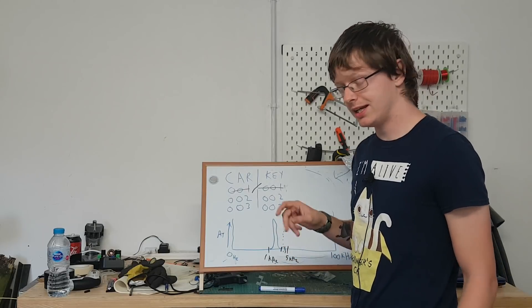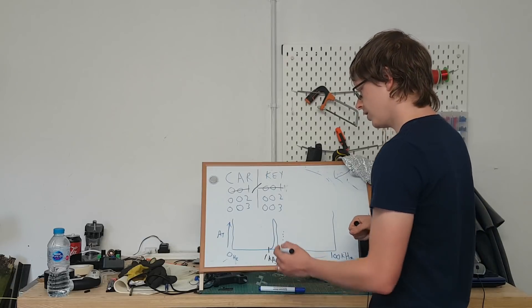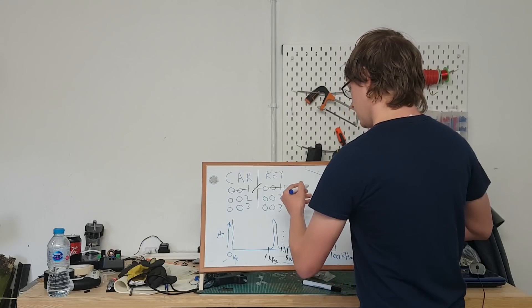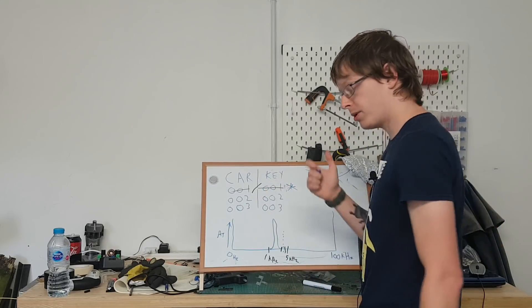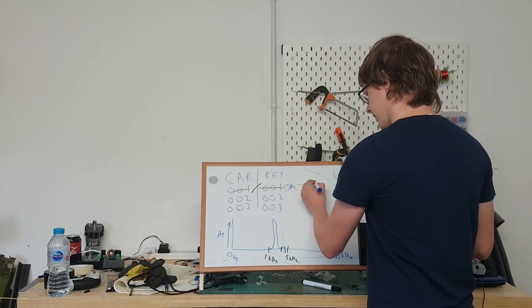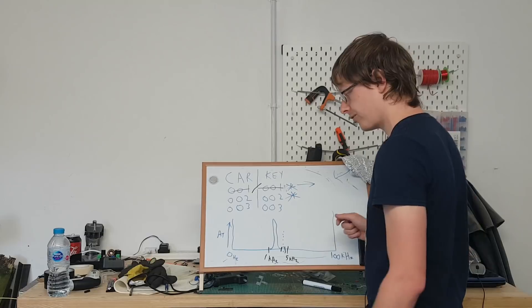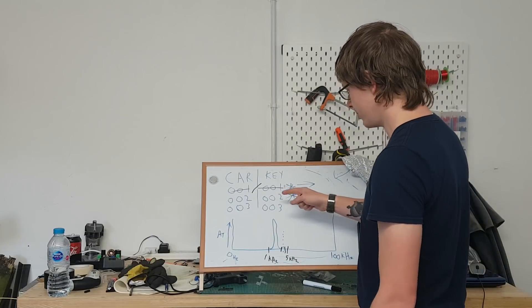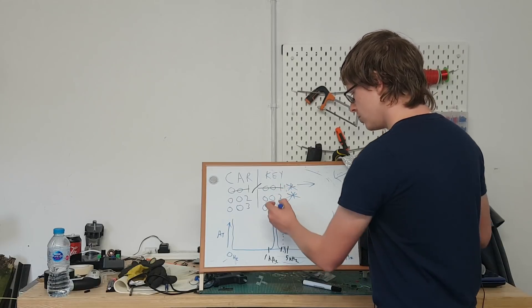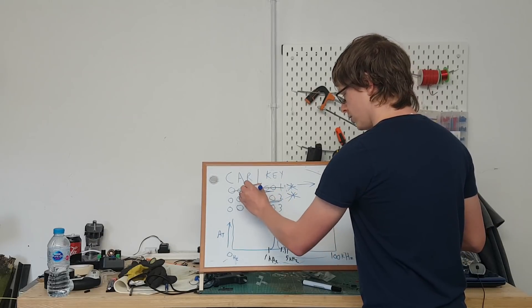And what it does is whenever it receives the first signal it keeps it for a second. Then if it receives another signal, it transmits the first signal it got. So say we captured, let me change my color, so we captured 001. The person hits the key fob again. What we do is we transmit that to the car and we keep the other signal that was sent through. So whenever they press the key fob again, the key fob thinks it's already used 001 so it moves on to 002. You keep 002 and you transmit 001 to the car.